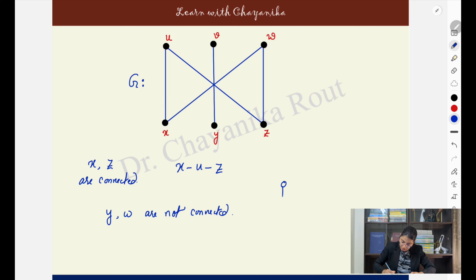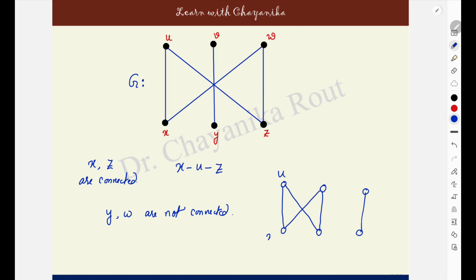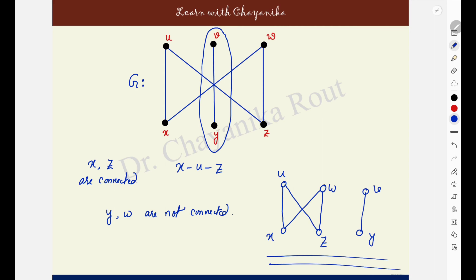These two vertices are not connected — they are disconnected vertices. You could have drawn this graph showing u, x, z, w, v, y separately, making it clear that one portion of the graph is not attached to the remaining portion. You can clearly see there is no path existing between x and v, or u and y, or z and v. So these are some disconnected pairs of vertices.